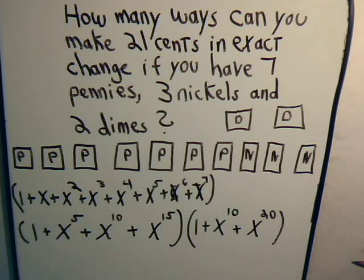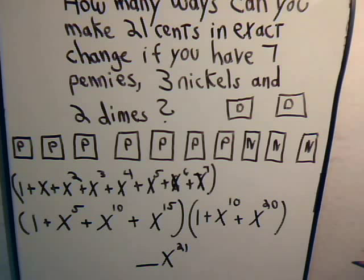And the solution is, or the answer is, we multiply this times this times this, and then we look for the coefficient of x to the 21, as we did in the previous problems.